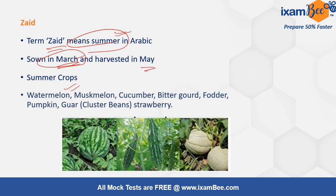These are short duration crops, mainly the cucurbits. The examples are mainly cucurbits like watermelon, muskmelon, bitter gourd, bottle gourd, and guar. These are the examples of Zayad crops.